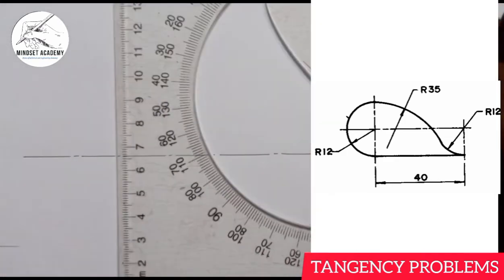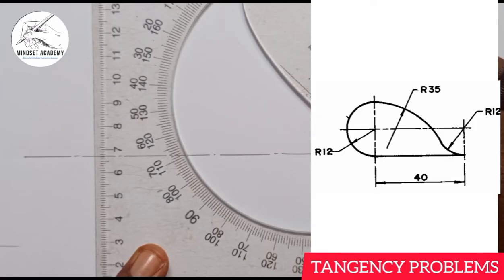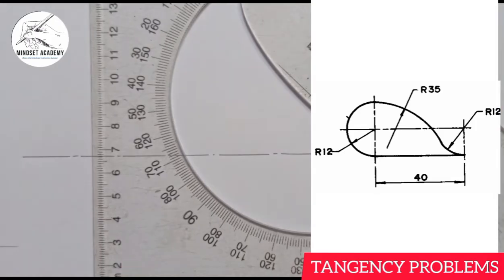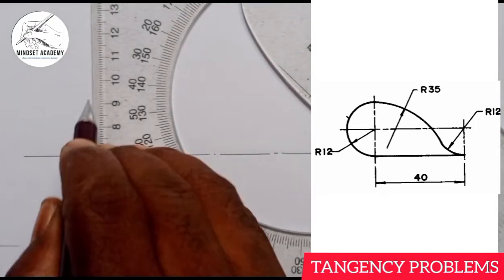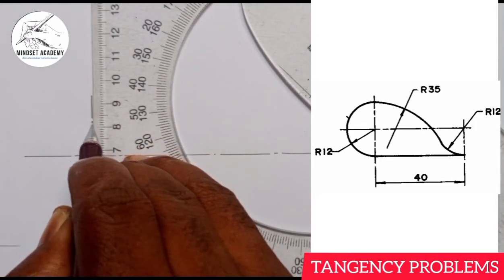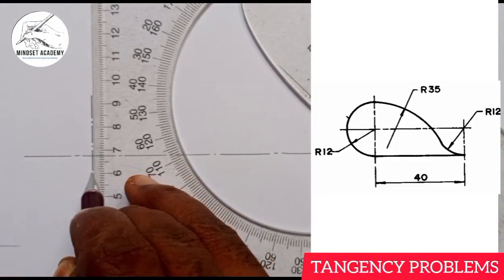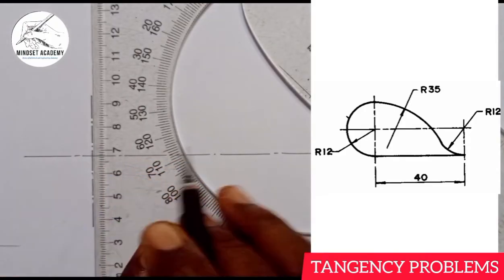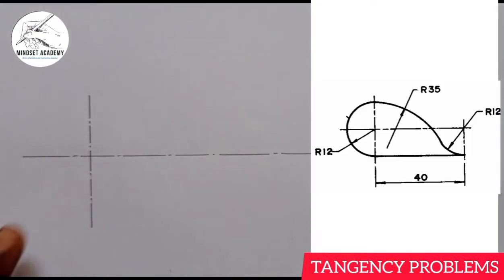And I'll pick a point — let's say this point I'm picking. I'll draw the long-short-long centerline vertically as well. So this center you see is the center you are seeing at the right hand side of the screen.